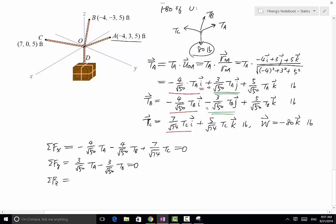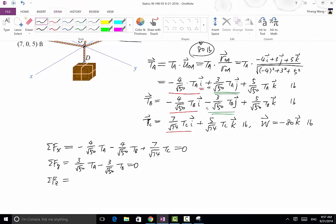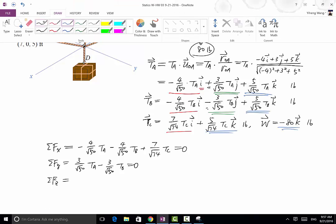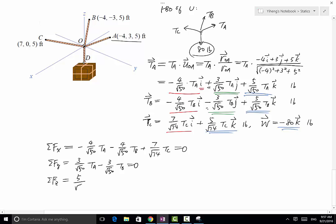And lastly, for the resultant force along the z direction, adding the ones along the z direction with unit vector k: 5 over square root of 50 TA plus 5 over square root of 50 TB plus 5 over square root of 74 TC minus 80 equals 0.